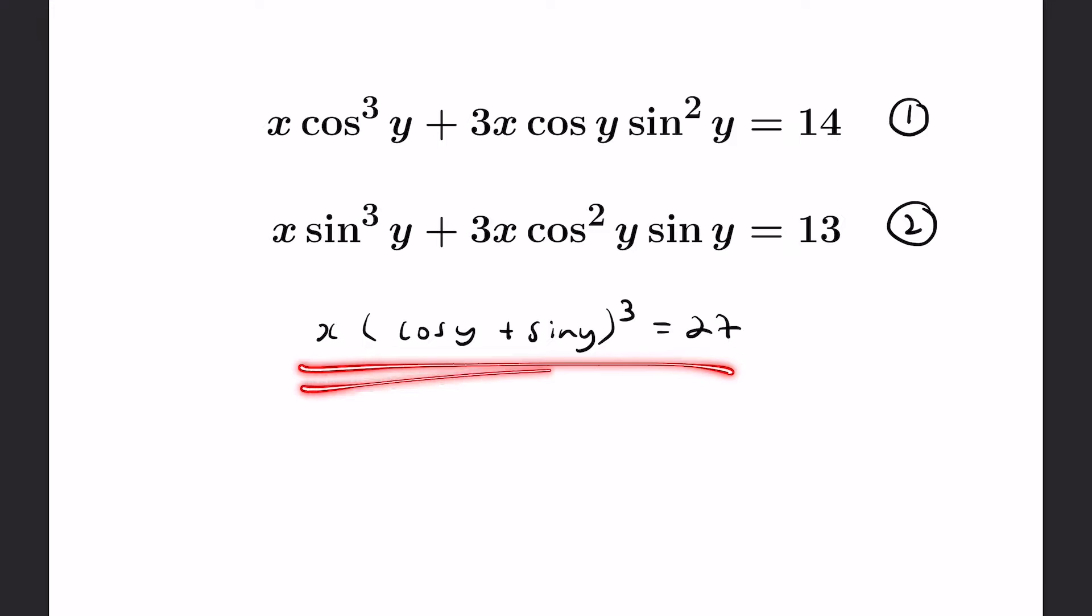Now we got this equation by adding 1 and 2. If we subtract 1 and 2, we would get a negative contribution to the sine cubed and a negative of cosine squared sine y. So instead of having a cosine y plus sine y all cubed, we'd have a cosine y minus sine y all cubed. In fact, we can test this out and this will equal 1.